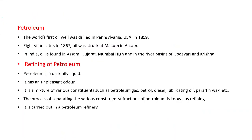The world's first oil well was drilled in Pennsylvania, USA, in 1859. Eight years later, in 1867, oil was struck at Makkam in Assam, India. Presently in India, oil is found in Assam, Gujarat, Mumbai High, and in the river basins of Godavari and Krishna.